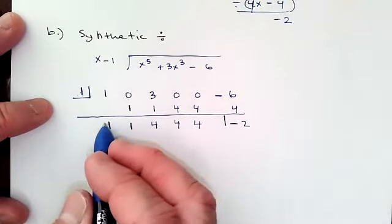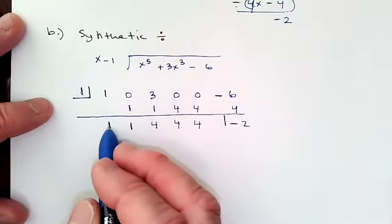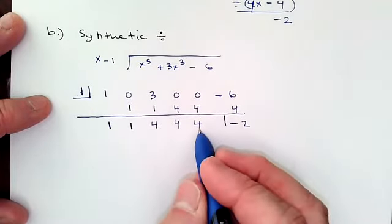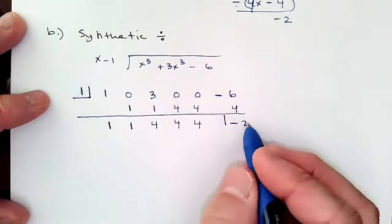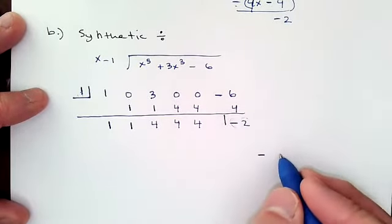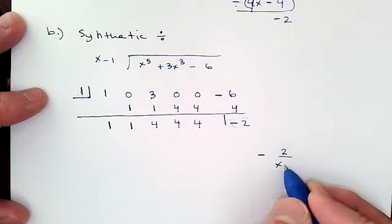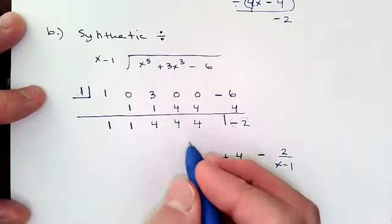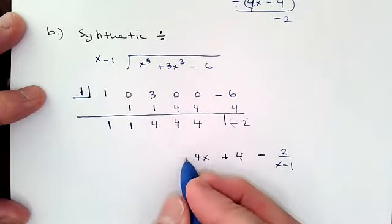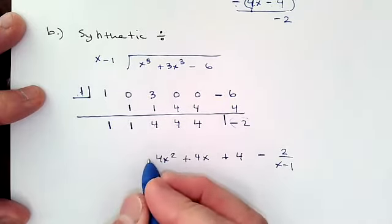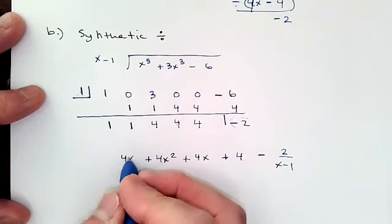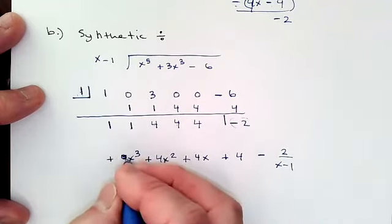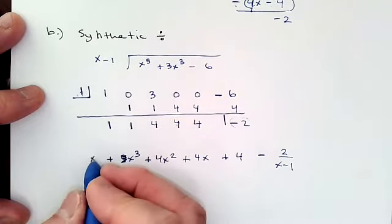Reading the result from the end: negative 2 is the remainder, so minus 2 over x minus 1. The next value is the constant term, then 4x as the linear term, 4x squared, 4x cubed, and 1x to the fourth. So the quotient is x to the fourth plus x cubed plus 4x squared plus 4x plus 4, minus 2 over x minus 1. Obviously much faster.